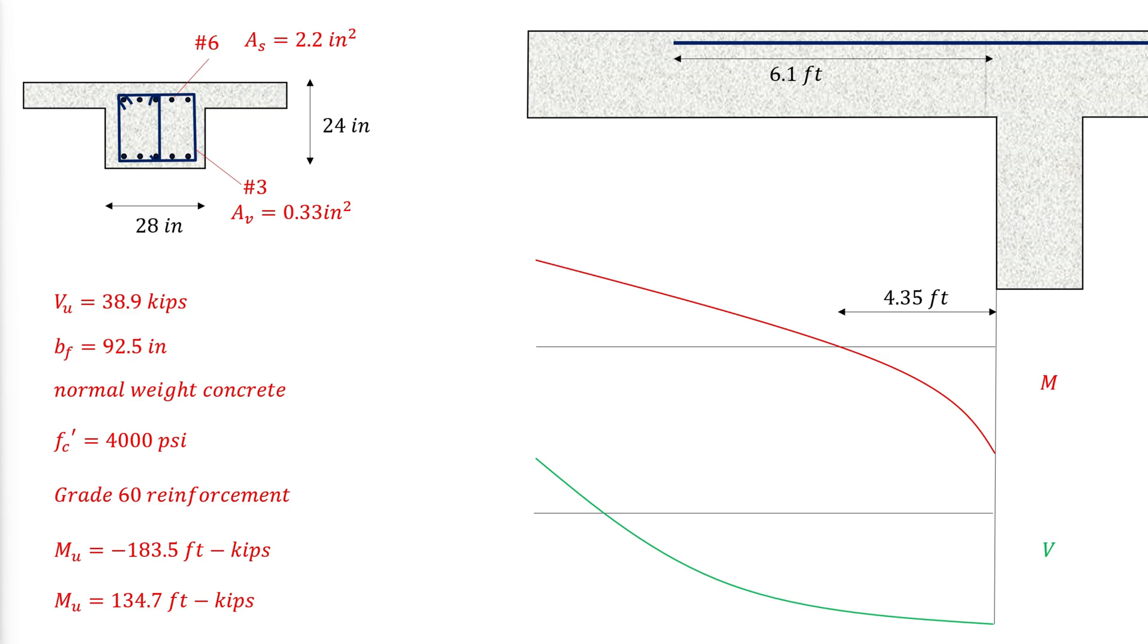We start the stirrups 2 inches from the face of the column. As previously calculated, they are spaced 10 inches away from each other. Whenever the shear value drops beyond this, no shear reinforcement will be required. Having 9 stirrups spaced at 10 inches makes the last stirrup 6.8 feet away from the column face. And because each stirrup bend should be held by a longitudinal bar, we extend the top bar to 7 feet.